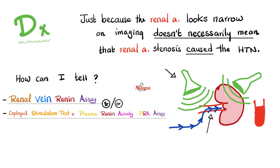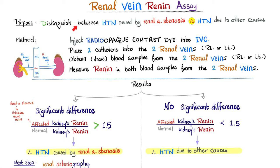You can see the narrowing on ultrasound. However, just because the renal artery looks narrower on imaging, or just because there is a bruit on the stethoscope, this does not necessarily mean the patient's hypertension is caused by the renal artery stenosis — it could be caused by something else. This is the purpose of the renal vein renin assay and the captopril stimulation test with plasma renin activity.